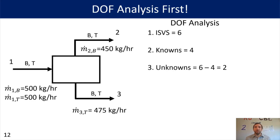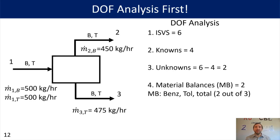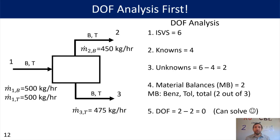With two unknowns, we need to reduce our degrees of freedom further using material balances. We have two material balances available: one for benzene and one for toluene, as well as a total material balance. However, you can only use independent material balances equal to the number of components, so we have two independent material balances. This brings our degrees of freedom down to zero, so we can solve this problem.